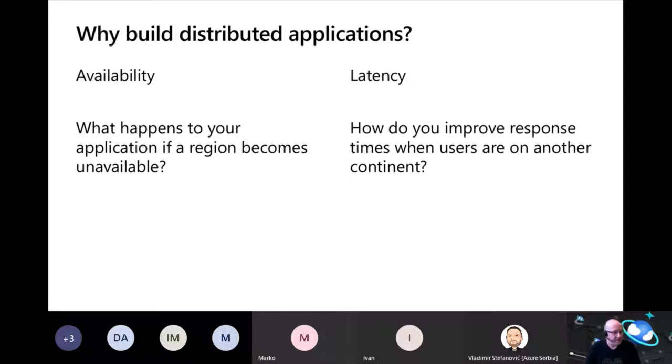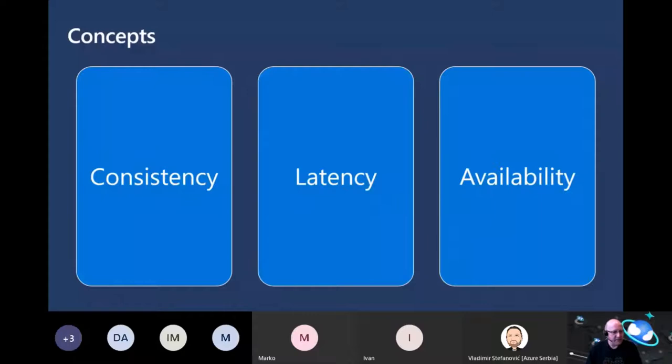But there are trade-offs that need to be understood when building distributed applications, and in this talk I'm going to explore these. The majority of this talk will focus on three concepts that are fundamentally trade-offs you need to understand: availability, latency, and consistency. It's essential that you as developers understand the relationship between them, because trade-offs have to be made to build distributed applications with distributed databases that have predictable performance and availability.